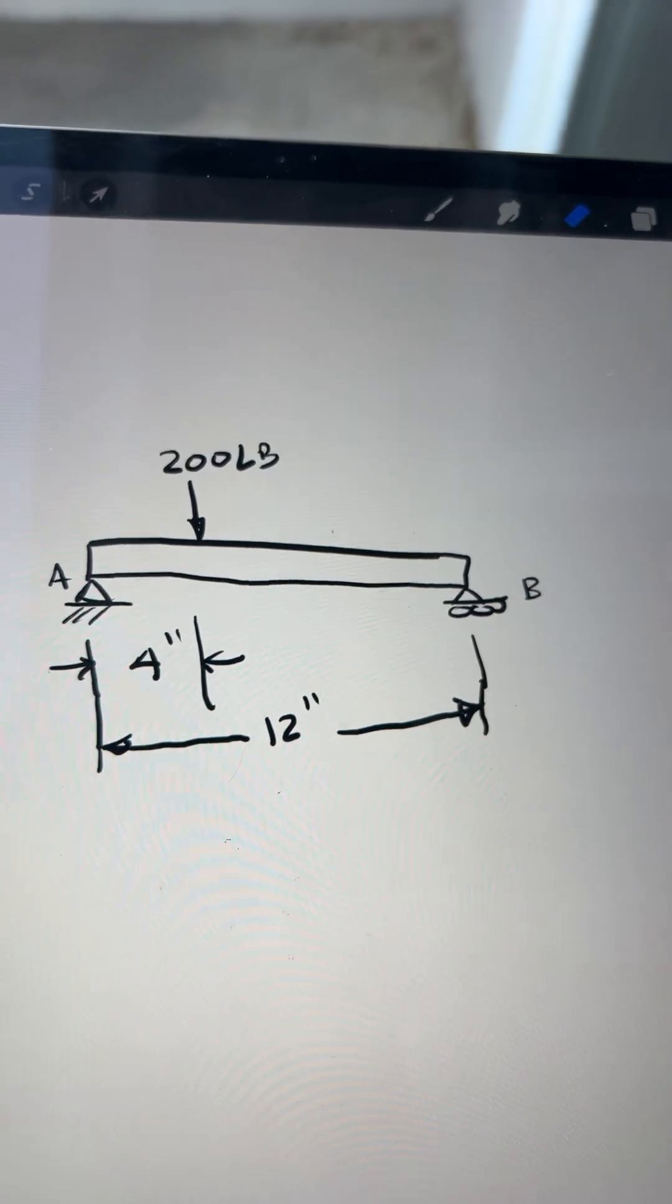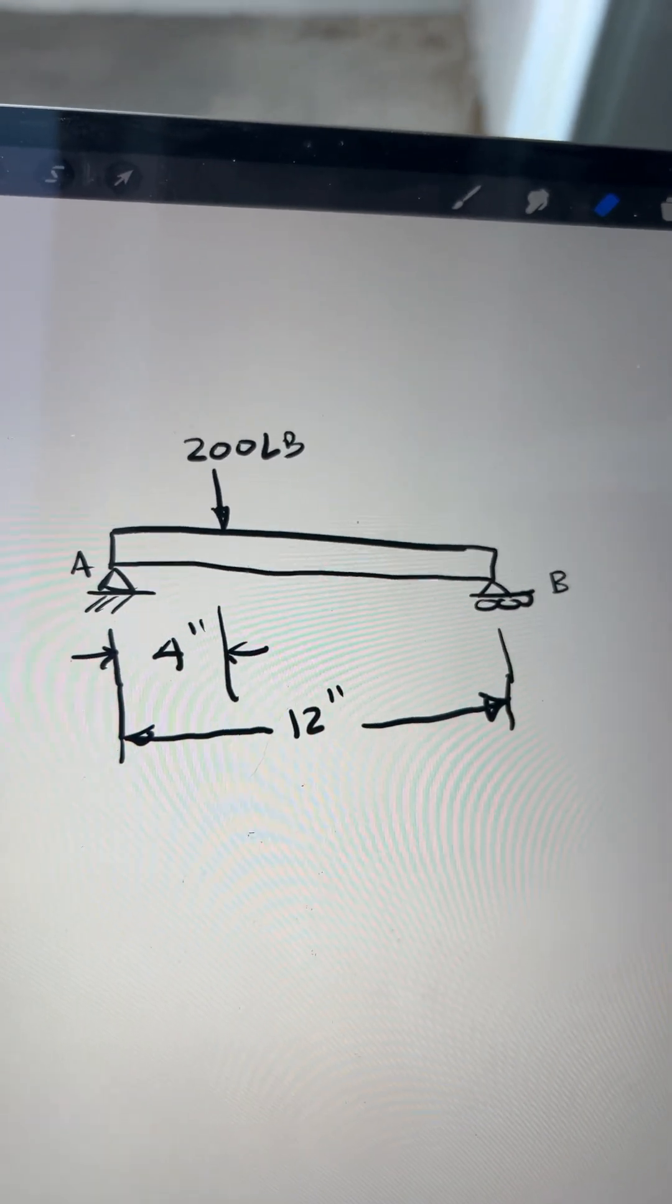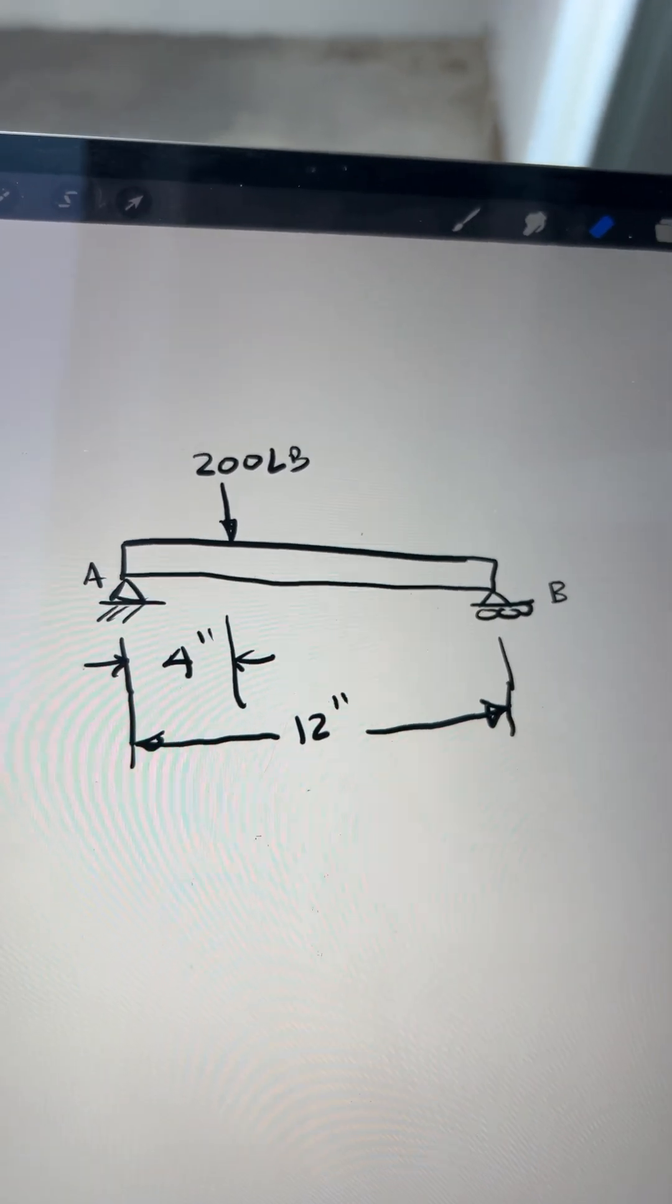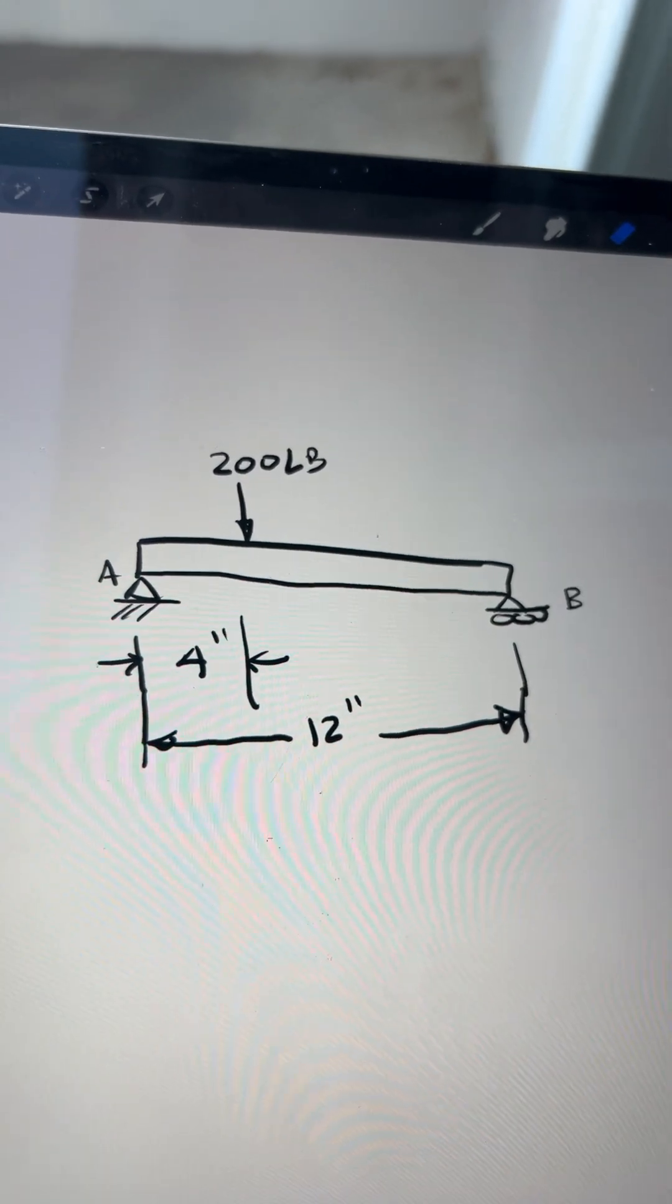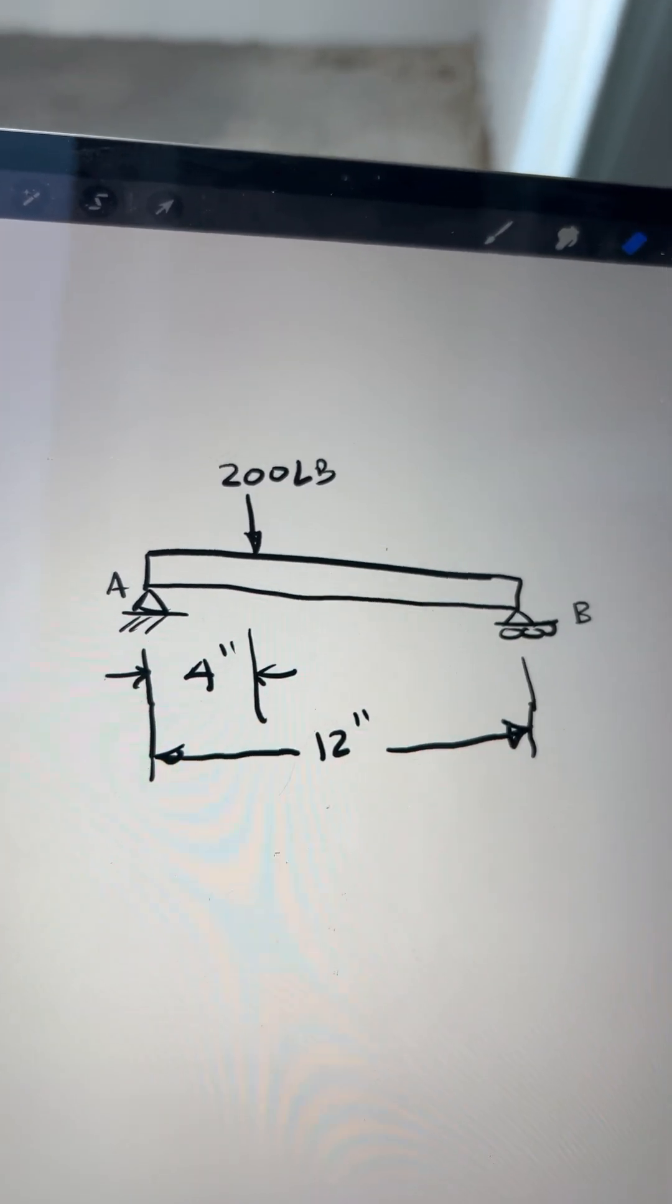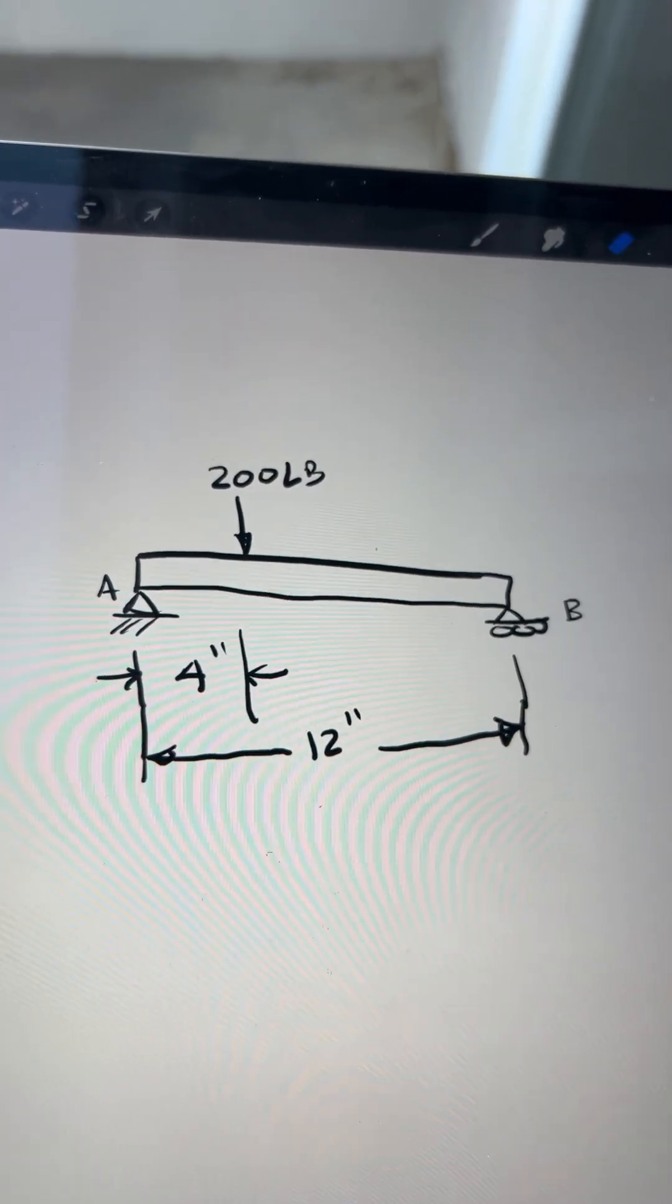Let's say we have a simple beam like this and we want the reaction at B. Since we want the reaction at B, the easiest way is just to sum the moments at A, which removes the unknown that we don't need from our equation.